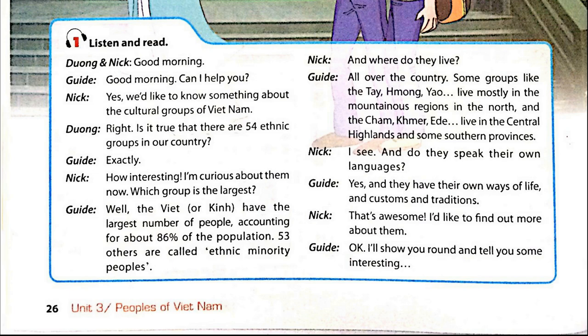And where do they live? All over the country. Some groups, like the Thai, Hmong, and Yao, live mostly in the mountainous regions in the north, and the Cham, Khmer, and Ede live in the central highlands and some southern provinces. And do they speak their own languages? Yes. And they have their own ways of life and customs and traditions. That's awesome! I'd like to find out more about them. OK, I'll show you round and tell you some interesting things.